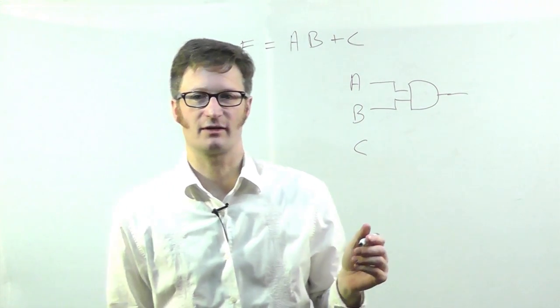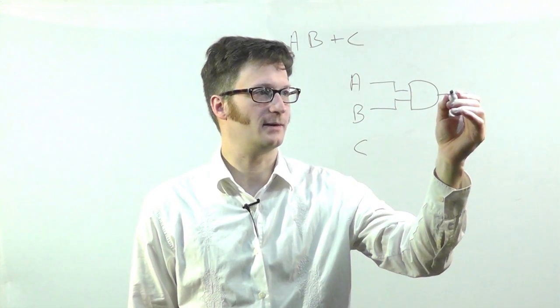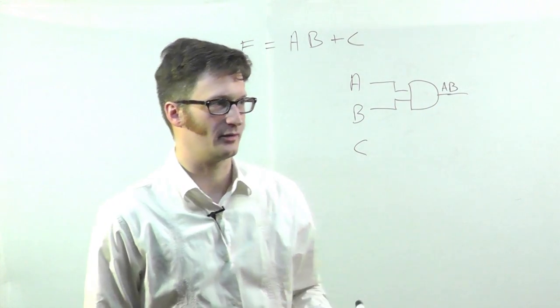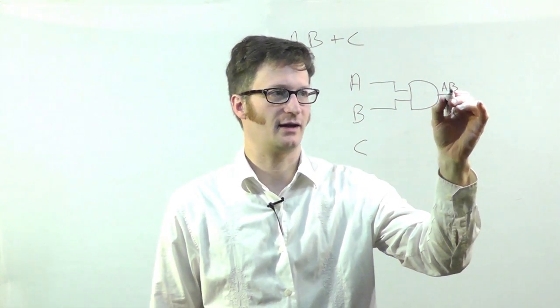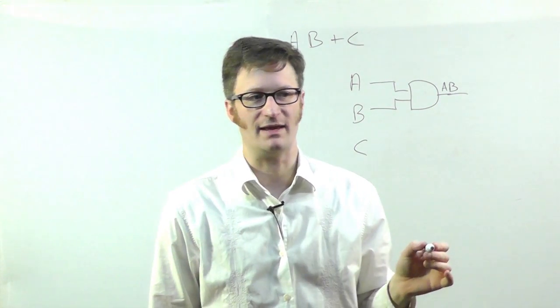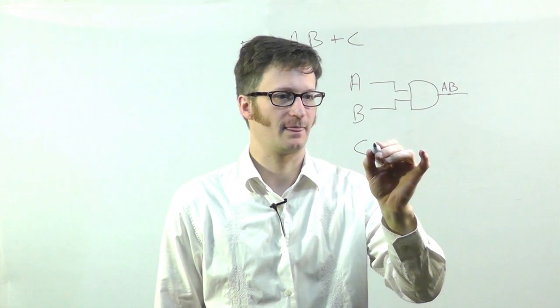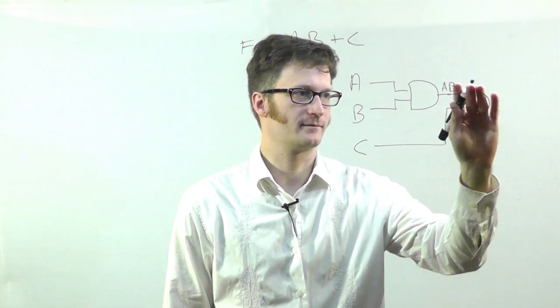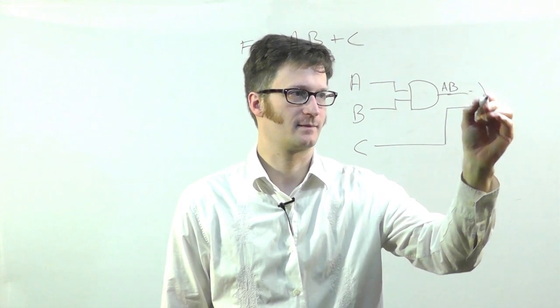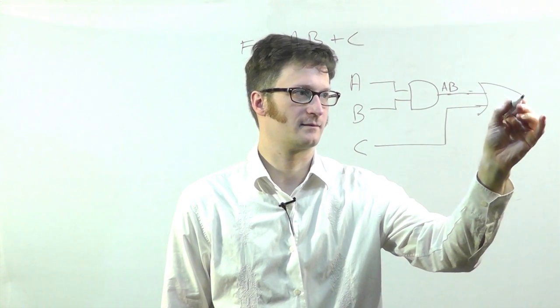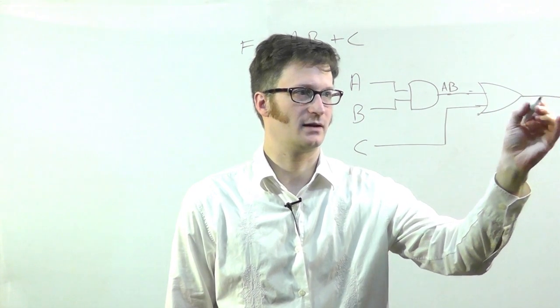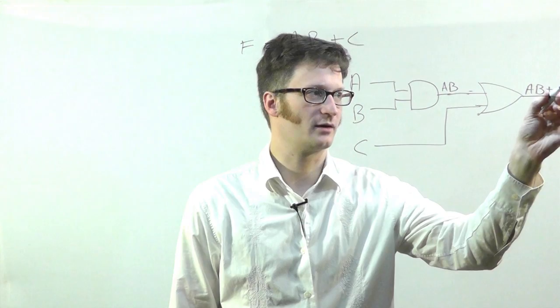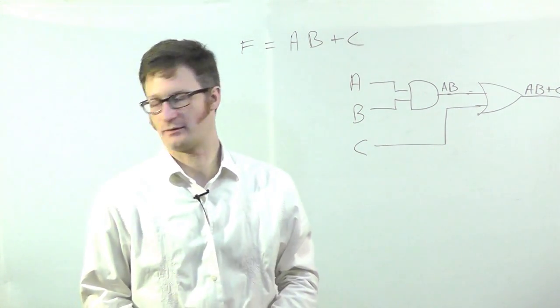And it helps when you're drawing these circuit diagrams to label what's going on at each part. So I have, at this point, this signal line is doing AB, A AND B. Now I'm going to bring C over. And at this point, I have AB or C.